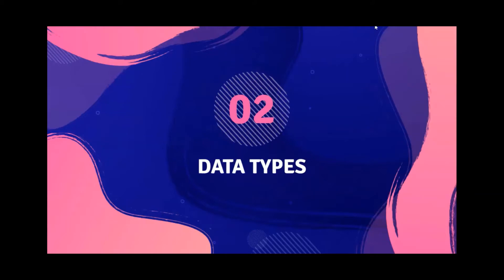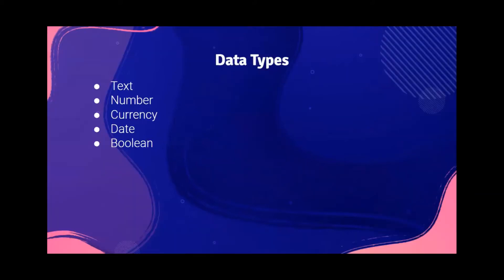Next, we have data types. There are five main data types: text, number, currency, date, and boolean.